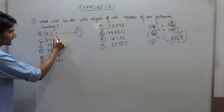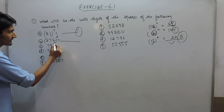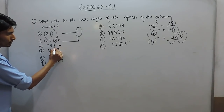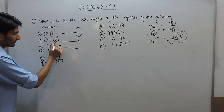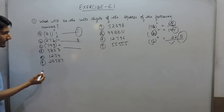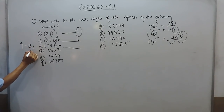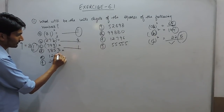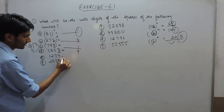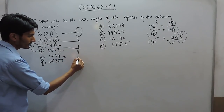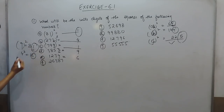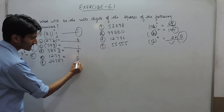Same case with this number: when squared its unit digit will depend on 9, and the square of 9 is 81, so the unit digit will become 1. Same case with this: square of 3 is 9. Square of 4 is 16, but we are considering only the unit digit, so the unit digit must be 6.